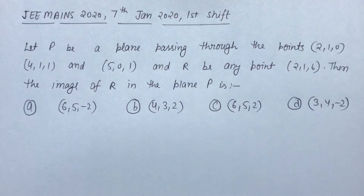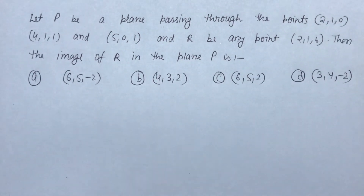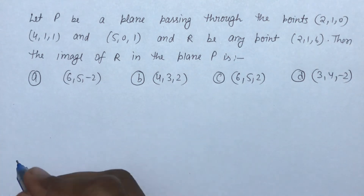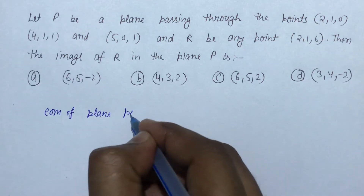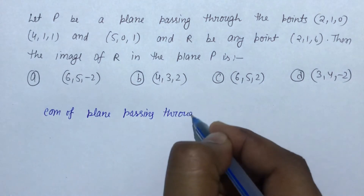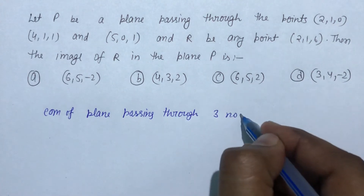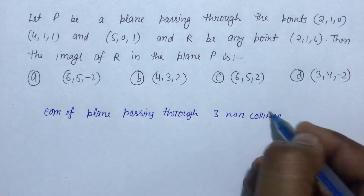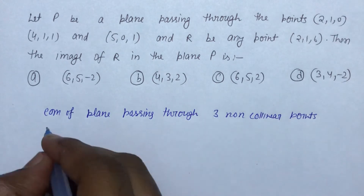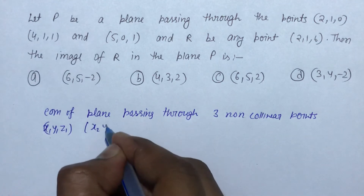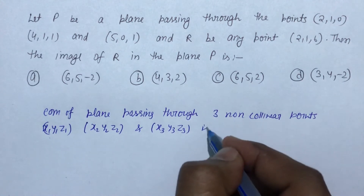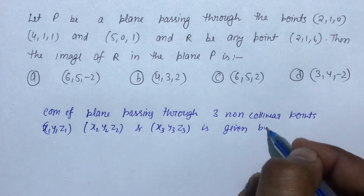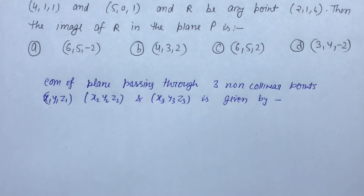Before proceeding with this question, let us understand the concept behind this. First of all, we will see how to write the equation of a plane passing through three non-collinear points. The equation of a plane passing through three non-collinear points (x1, y1, z1), (x2, y2, z2), and (x3, y3, z3) is given by a determinant formula.